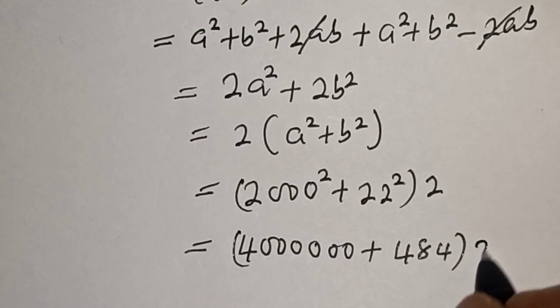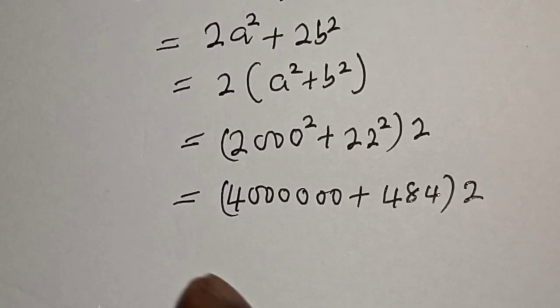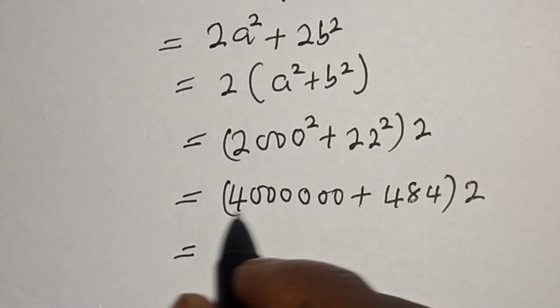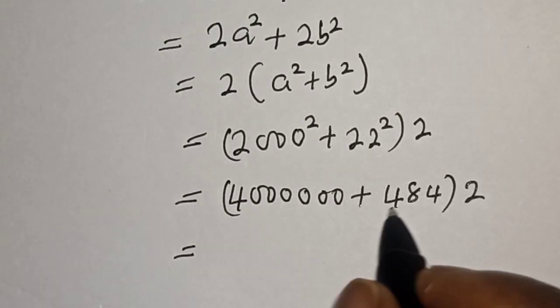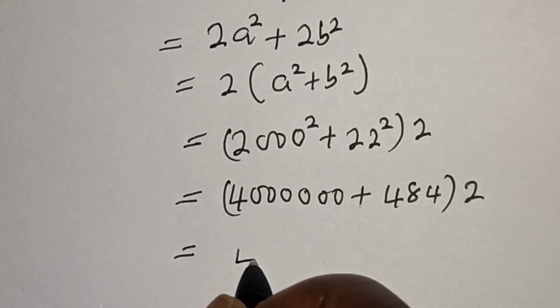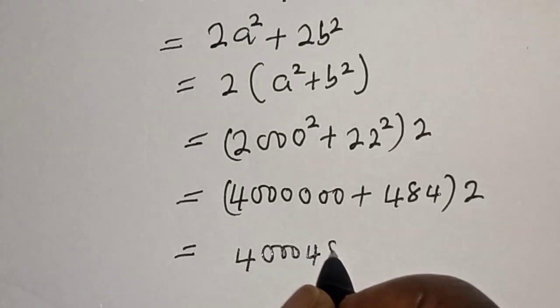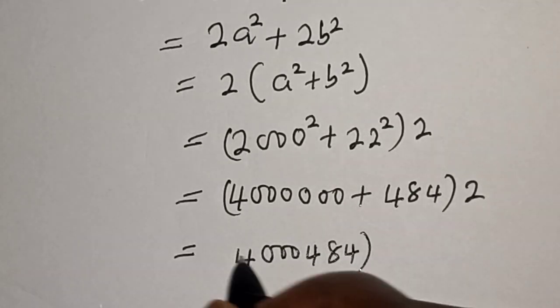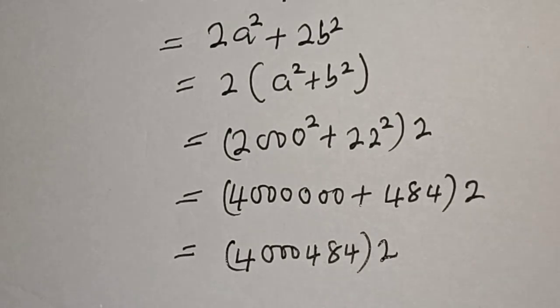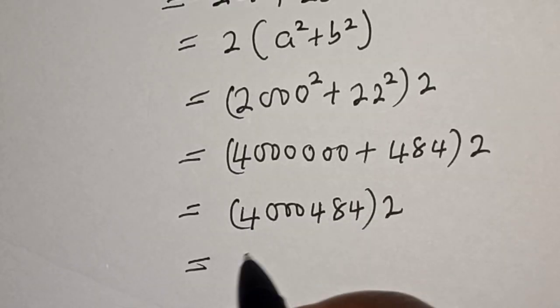Everything multiplied by that 2. Then this is equal to, let's add this together: 4,000,000 + 484 = 4,000,484. Multiply by 2.